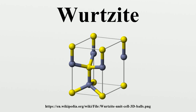The Wurtzite group includes cadmoselite (CdSe), greenockite (CdS), matraite (ZnS), and rambergite (MnS), in addition to wurtzite. Its crystal structure is called the wurtzite crystal structure, a member of the hexagonal crystal system. It consists of tetrahedrally coordinated zinc and sulfur atoms stacked in an ABABAB pattern. The unit cell parameters are: a = b = 3.82 Å (382 pm), c = 6.26 Å (626 pm), V = 79.11 ų, Z = 2.